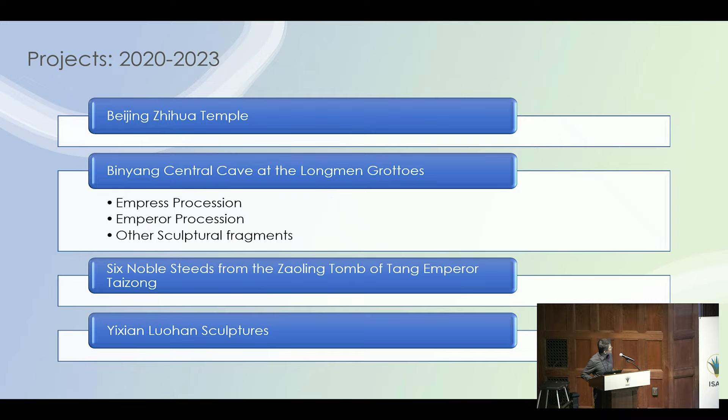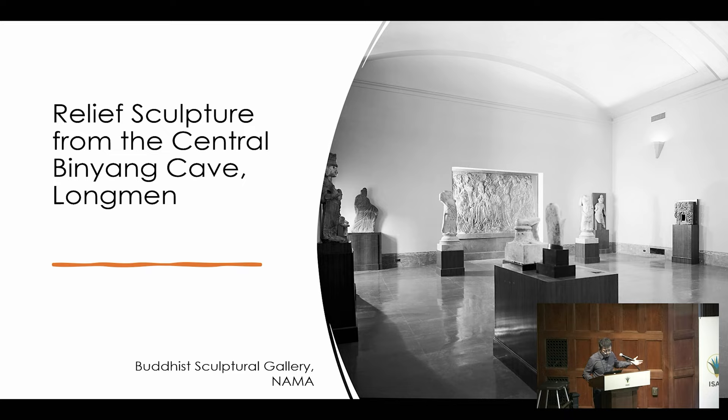Because time is really brief, I'm going to introduce these two aspects using two examples. One is the Empress Procession, under the second project. And then for reconnection, I will use the Beijing Tzuhua Temple as an example. The piece you are seeing right here is the Empress Procession in the Nelson-Atkins Museum of Art. It was installed there in 1941, and its original site is right here.